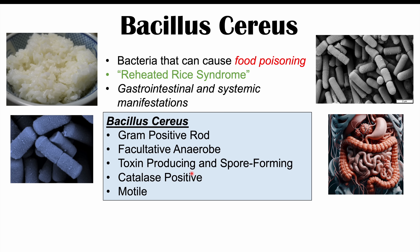The bacteria Bacillus cereus is a gram-positive rod. It's facultatively anaerobic, meaning it can operate when oxygen is present, but if there's no oxygen, it can switch to fermentation. It is toxin-producing and spore-forming, which are important when we discuss pathophysiology. It is also catalase-positive and a motile bacteria, so it can move around on its own.